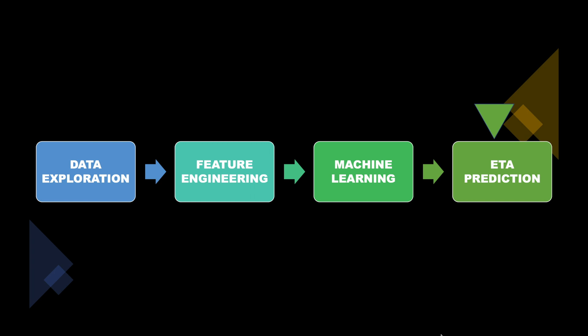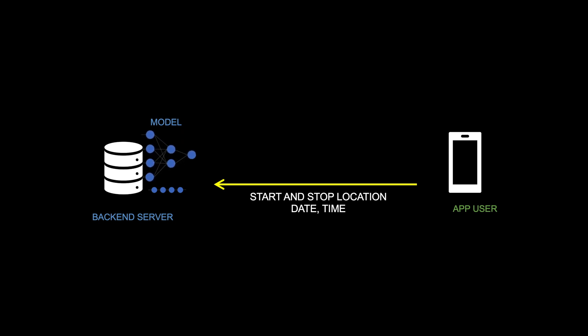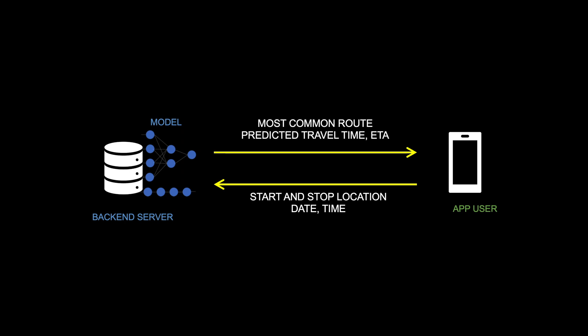Here is a visual representation of how the model can actually be used. The model sits on a backend server; the app user can enter the start and stop location, and the date and time of travel, and an API call is made to the model. The model takes all non-sequential inputs and feeds them to the fully connected part, while the start and stop place are fed to the LSTM part, which gives the most common route between the two locations. Based on all these inputs, the model gives a predicted travel time and ETA, which is returned to the app.